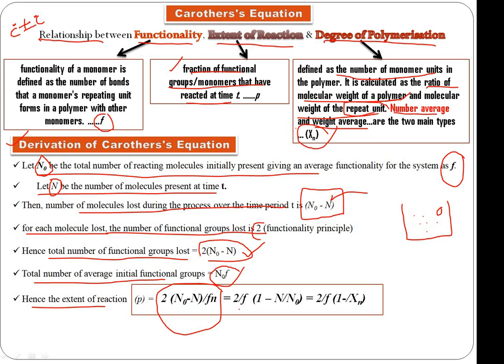This is f multiplied by N₀, so N₀ is common. You can take it out and use it further.